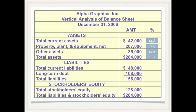Total current liabilities will be 48,000 divided by 284,000, telling us that total current liabilities are 16.9 percent of total liabilities and stockholders' equity. Long-term debt is 108,000 divided by 284,000, telling us that long-term debt is 38 percent of total liabilities and stockholders' equity.